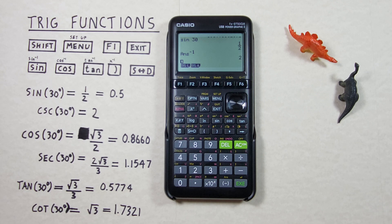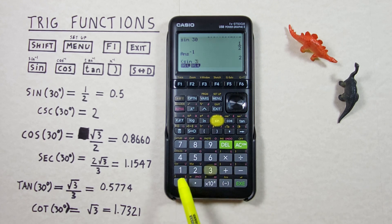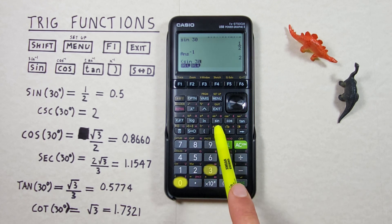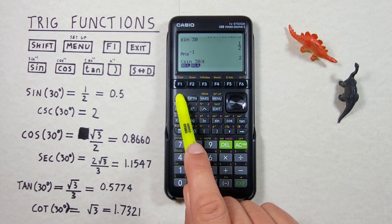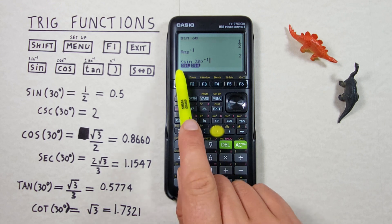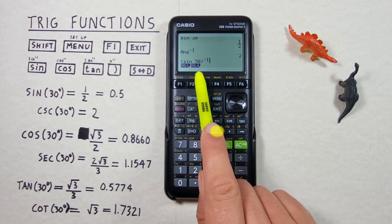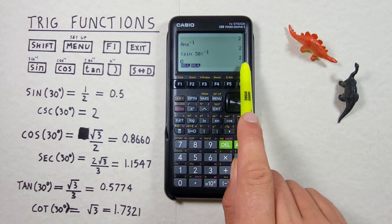We can also use brackets if we want to do this all in one step rather than two. So to do that we press the open bracket, then sine of 30, then close our bracket, then press shift inverse, and hit EXE. We see we get the same answer of 2.